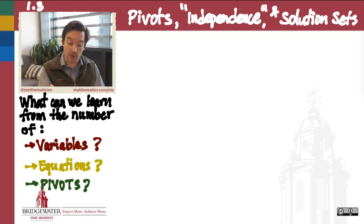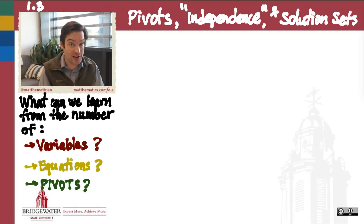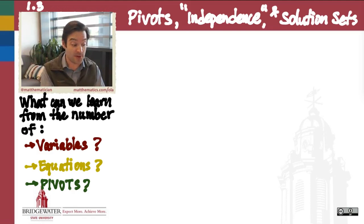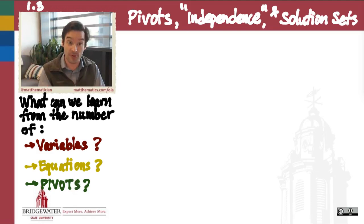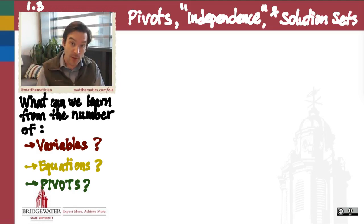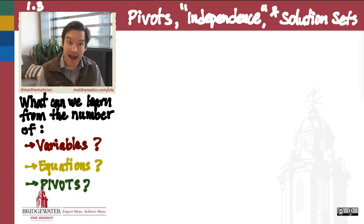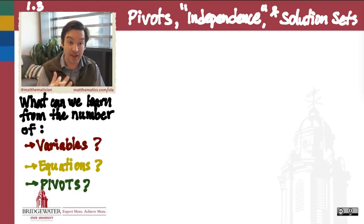...what is the number of variables in the system that we just solved actually telling us theoretically as a mathematical construct? What is the number of equations that participated in that system actually telling us in a broader sense about mathematical ideas? And perhaps most importantly, what does the number of pivots in a linear system of equations actually tell us about the nature of that linear system?